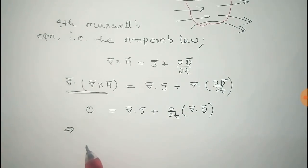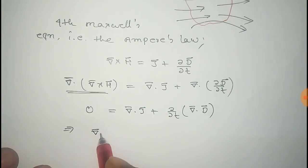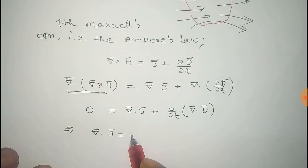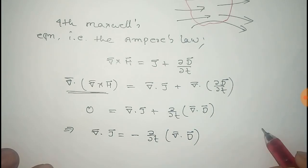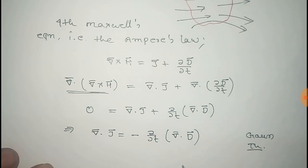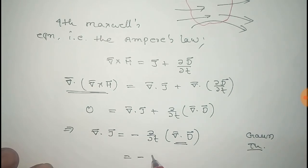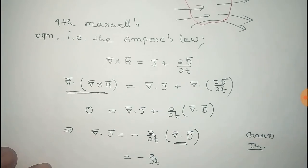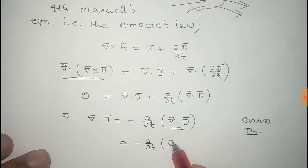And from this, divergence of J equals minus del del T of divergence of D. Now, from the Gauss theorem, we can write that divergence of D is equal to rho, that is the volume charge density. So, del del T of rho.